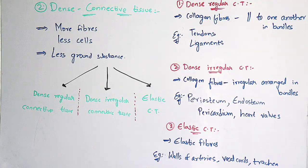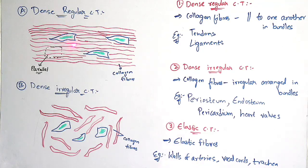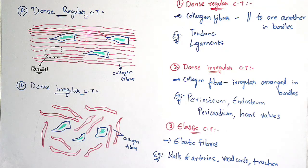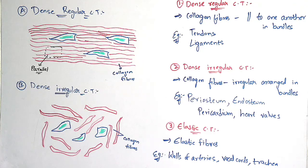Now I will show you the diagrams of dense regular connective tissue and dense irregular connective tissue. In the dense regular connective tissue diagram, all the red-colored ones are collagen fibers arranged parallelly, forming a bundle — that is dense regular connective tissue. In the dense irregular connective tissue, the collagen fibers are present in more amounts but are irregularly arranged — so it is named dense irregular connective tissue. Thank you for watching this video. If you like this video, please like and subscribe, and if you have any doubts, please comment in the comment box.